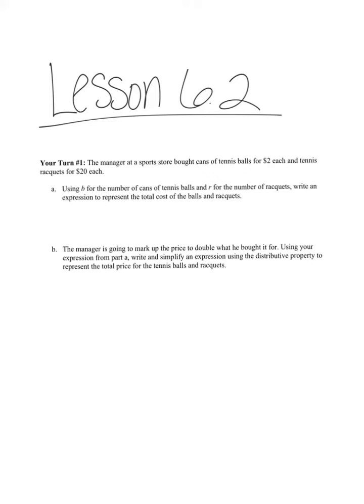This is Mrs. Reister with Lesson 6.2, your turn number one. The manager at a sports store bought cans of tennis balls for $2 each and tennis rackets for $20 each. Using B for the number of cans of tennis balls and R for the number of rackets, write an expression to represent the total cost of the balls and rackets.